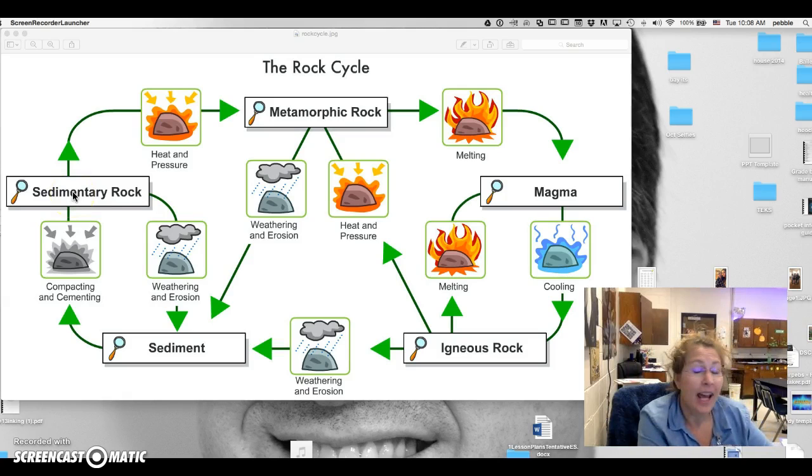They're different in how they formed, not necessarily where they formed or how old they are, but how they formed. Each one can become the other, so let's start here with igneous rock.